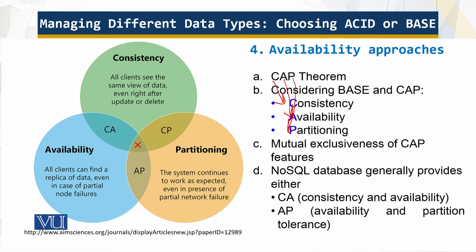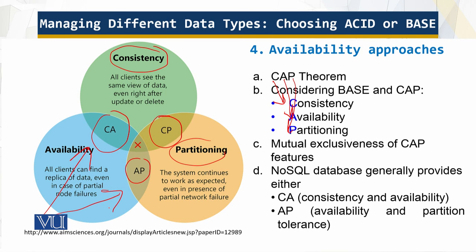Here are some questions to consider: Is the data consistent, eventually consistent, or without any consistency guarantees? During a partition, is all data still available? If some parts of the same database cluster aren't communicating, can the database still function? The CAP theorem states that you cannot have all three features at the same time — you can only have two of the three, and each is a sliding scale. Typically the trade-off is between consistency and partitioning. A particular NoSQL database generally provides either consistency and availability, or availability and partitioning.